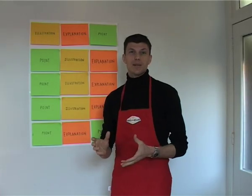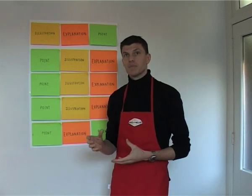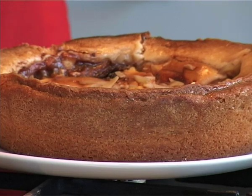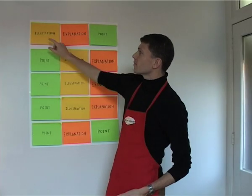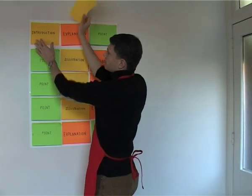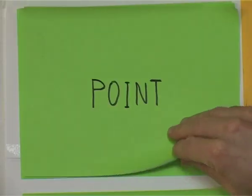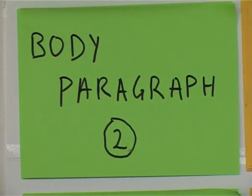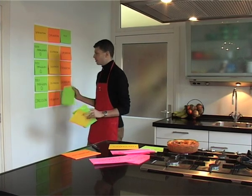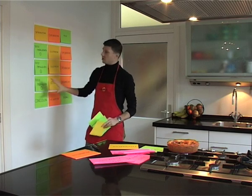So we've established we have three types of ingredients: point, explanation, and illustration. Now it's time to put those ingredients into a recipe. The recipe for a five paragraph essay looks like this: we start with the introduction, we'll have three body paragraphs — body paragraph one, two, and three — and a conclusion finally. That's the rough overview of our five paragraph essay.